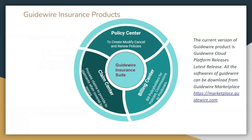Guidewire insurance has three major applications. The first is PolicyCenter, where an agent can create, modify, cancel, or renew policies. If any loss happens, claims will be opened against the policy through the ClaimCenter application. The BillingCenter handles policy commissions, producer and agent commissions, delinquency plans, cancellations, and any fees or charges — everything related to billing is part of the BillingCenter application.